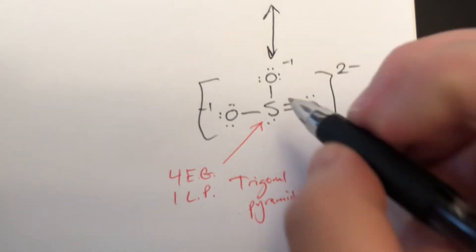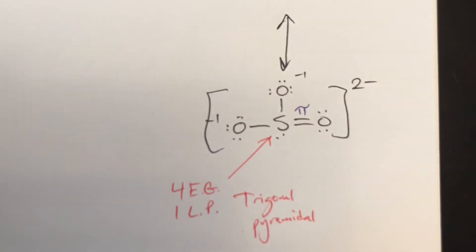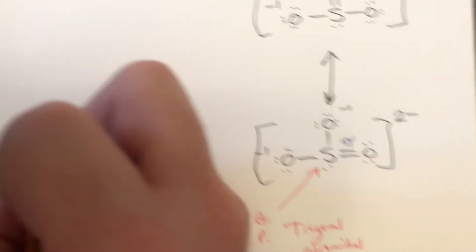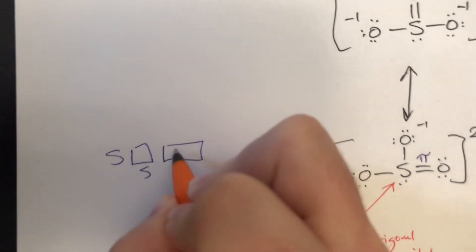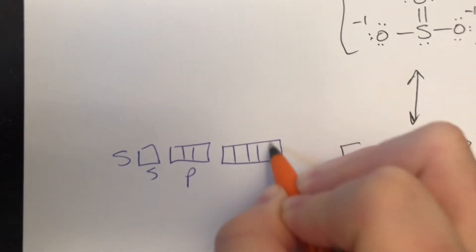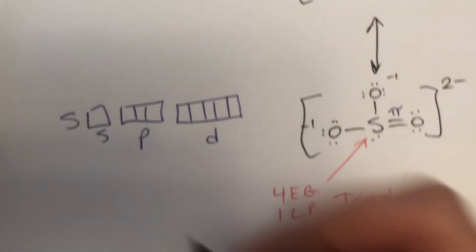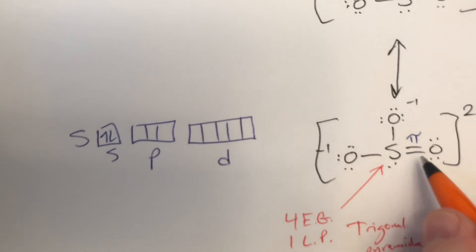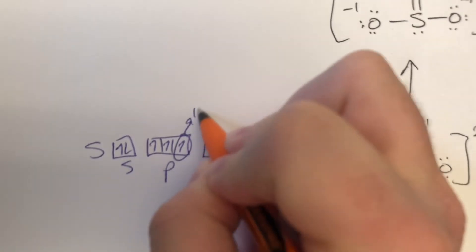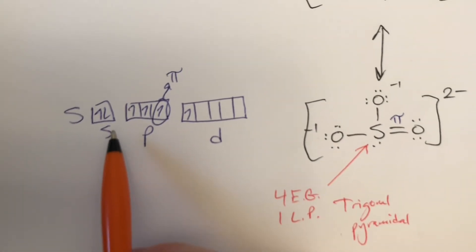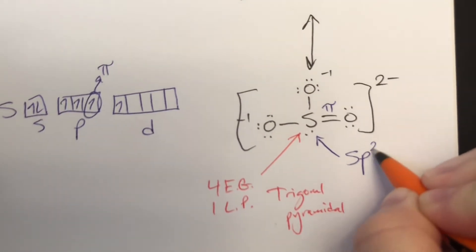For hybridization on sulfur in SO₃²⁻, we have one pi bond but otherwise everything else is sigma bonds. Sulfur has an s, three p orbitals, and d orbitals — if it violates the octet rule, you will need a d orbital. We have a lone pair and four bonds, so four unpaired electrons. One pi bond uses up one orbital, and we merge what's left: one s, two p's, and one d. So the hybridization is sp2d.